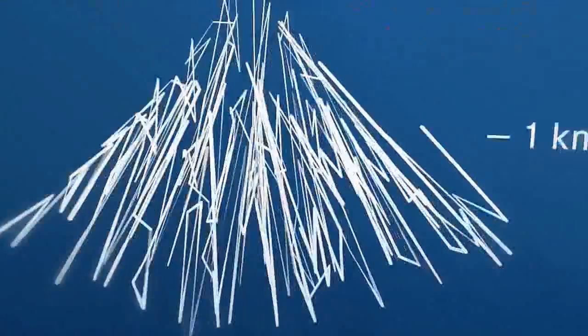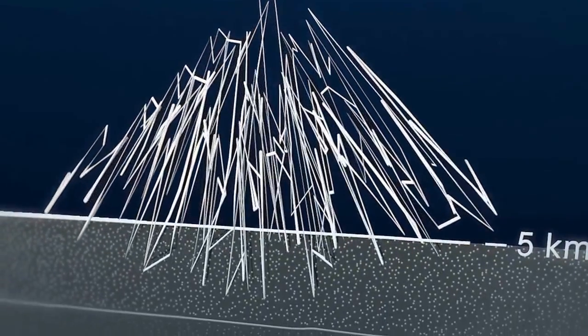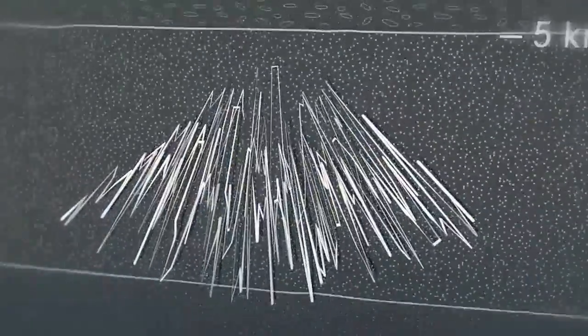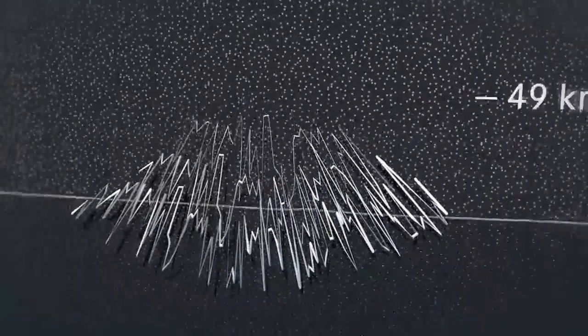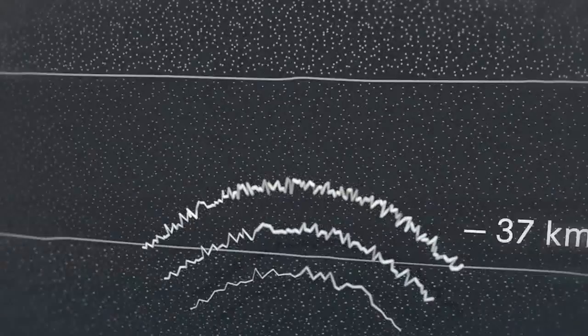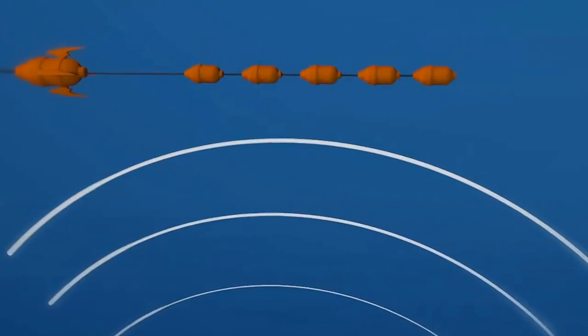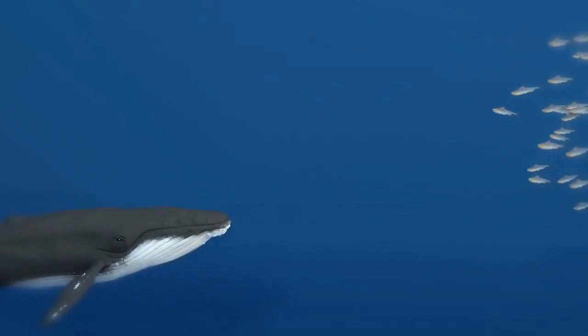Airgun pulses are so loud that they can travel through thousands of meters of water and penetrate tens to hundreds of kilometers into the Earth's crust. The echo reverberates from oil and gas deposits all the way back to the measuring devices at the surface.